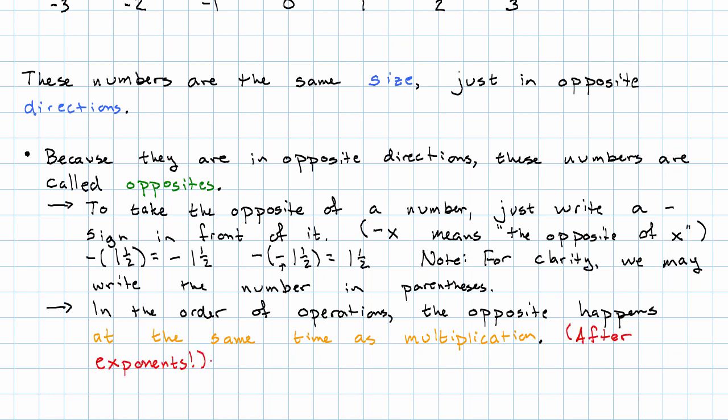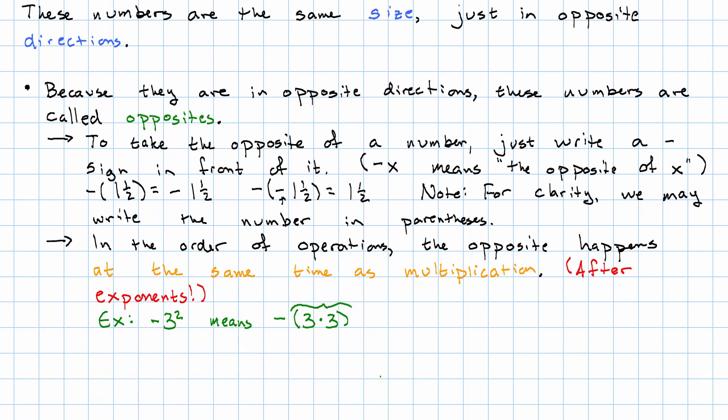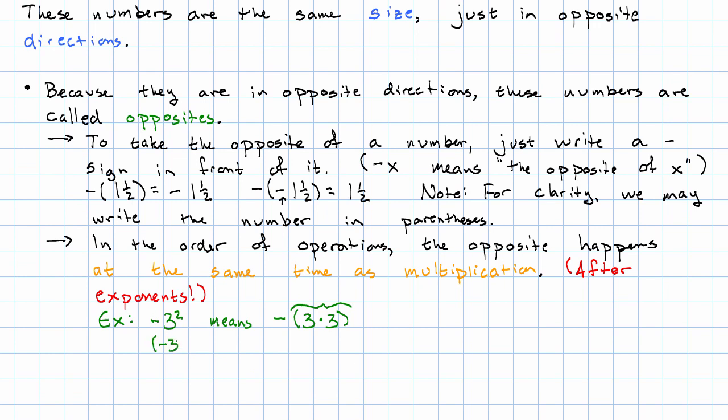What does that mean? That means that if I write negative 3 squared without parentheses, that means square 3 and then take the opposite. If I write negative 3 squared with the negative 3 in parentheses, that's telling me to make it negative before I do the exponent. So that means negative 3 times negative 3. That says make the number negative, then use the exponent.